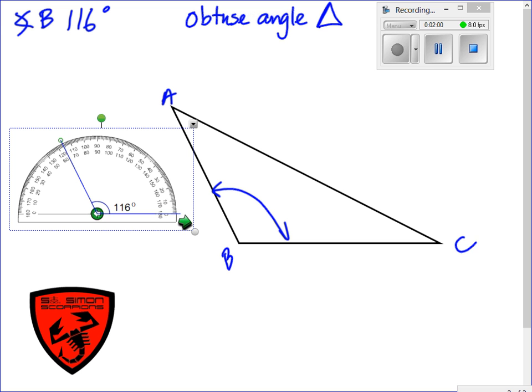Alright, now let's measure the other angles, namely angle A and C, and we're going to see if they add up to 180 degrees. So, we said angle B is 116. From this ray to the bottom ray, it is 116.